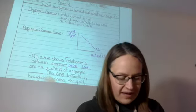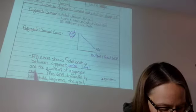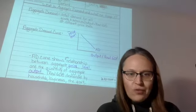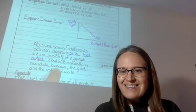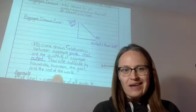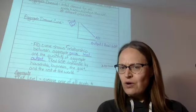And then the quantity of aggregate output or real GDP demanded by households, businesses, the government, and the rest of the world. And that sounds familiar, right? Households, businesses, government, rest of the world.